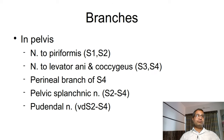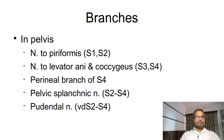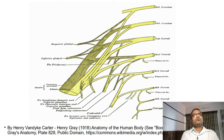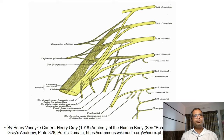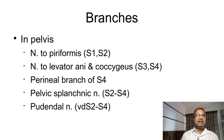Branches coming from the sacral plexus in the pelvis are five. One is the nerve to piriformis. Second is nerve to levator ani and coccygeus — its formation comes from rootlets of S3 and S4. Third one is the perineal branch of S4. Fourth is pelvic splanchnic nerve. Fifth one is the pudendal nerve. The nerve to piriformis will supply the piriformis muscle through deep to this muscle.